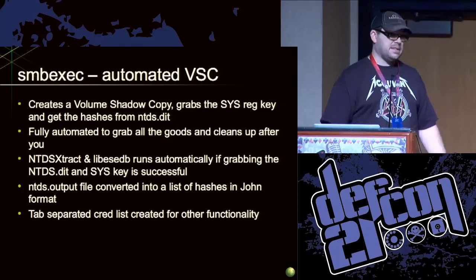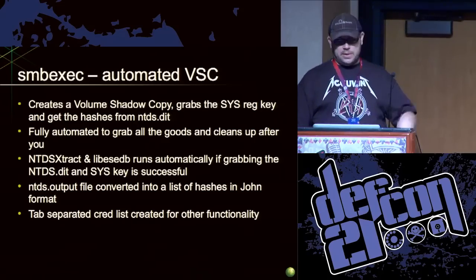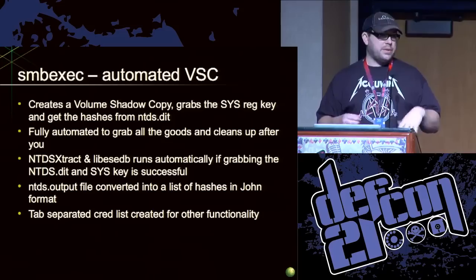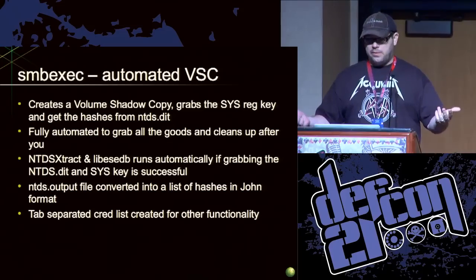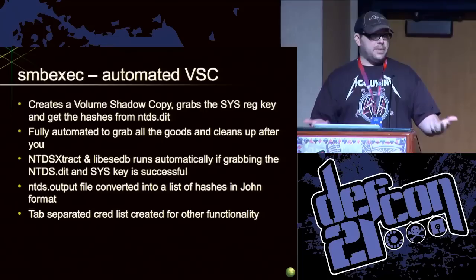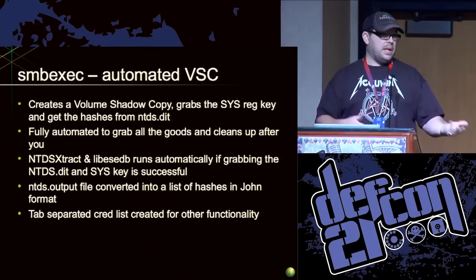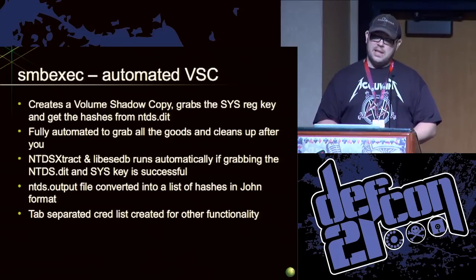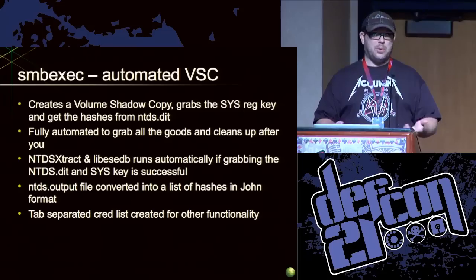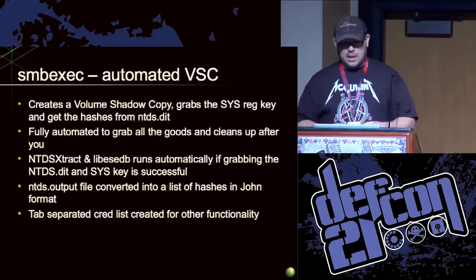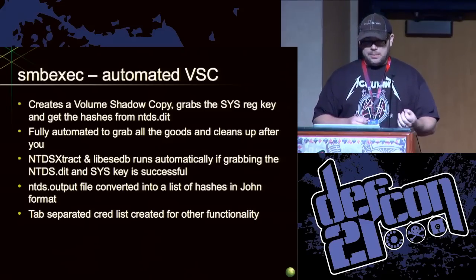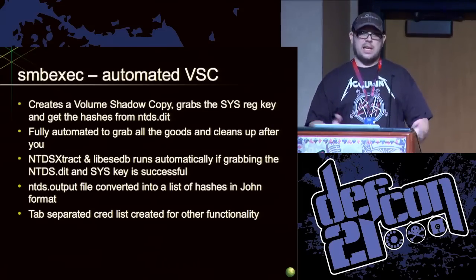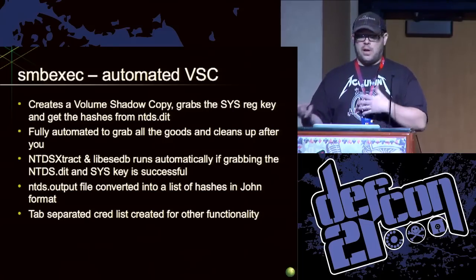SMB exec — we're like, shit, let's get stuff off the domain controller too while we're at it. I went to Google and Google told me how to run everything from the command line. What this will actually do is log in over port 445, create a volume shadow copy, save off the ntds.dit and the syskey. When it's done, it cleans up after itself — it deletes the volume shadow copy it created. There was actually a blog post back in 2005 about doing this as well, so it's been around for a while. Once everything is good, it runs ntds extract and libby-esedb to get the hashes out, and also creates a tab-separated cred list for other functionality within SMB exec.